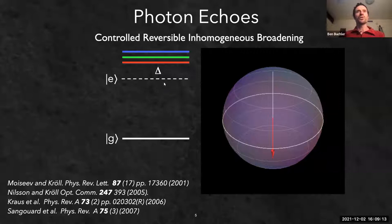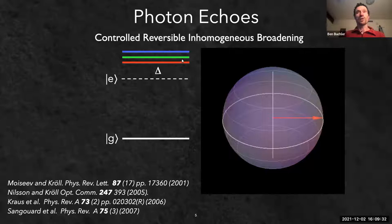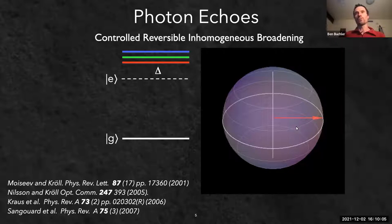Any quantum information carried by a photon could in principle be retrieved from an atom or ensemble of atoms. However, the problem is spontaneous emission - if the electron decays spontaneously, the quantum information will be destroyed. We need to build a quantum optical atom system that allows light to be stopped and recalled while avoiding spontaneous emission.